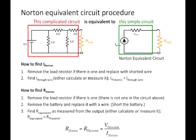How do you find the Norton equivalent? It turns out it's a similar procedure. You remove the load resistor, find the current through the wire — calculate or measure it — and then I_Norton is equal to the current through the wire. To find R_Norton: remove the load resistor, remove the battery, replace it with a wire, and find R equivalent as measured from the output. It turns out the Norton equivalent resistance and the Thevenin equivalent resistance are the same, and V_Thevenin divided by I_Norton equals the equivalent resistance — the Thevenin or Norton resistance.